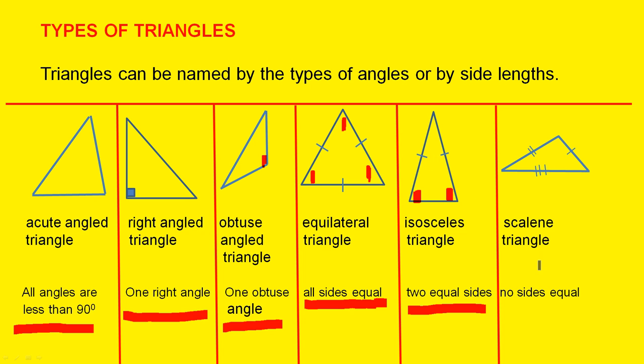And finally we have a scalene triangle, where no sides are equal. That is, the three sides are different lengths.